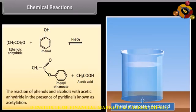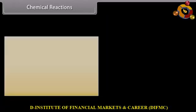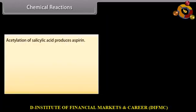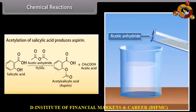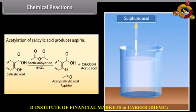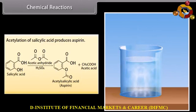The reaction of phenols and alcohols with acetic anhydride in the presence of pyridine is known as acetylation. Acetylation of salicylic acid produces aspirin. Acetic anhydride reacts with salicylic acid in the presence of sulfuric acid to form acetylsalicylic acid, or aspirin, and acetic acid.